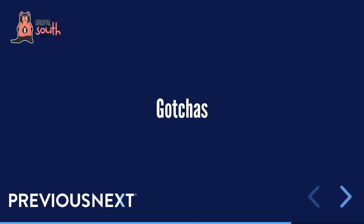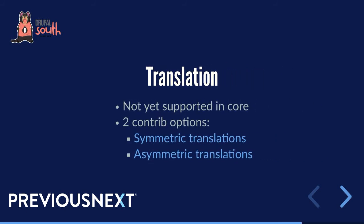Let's briefly touch on some gotchas — things that are good to know before you go implementing Layout Builder. Translation support is interesting: translation-specific layouts are not supported by Layout Builder core. Thankfully, contrib comes to the rescue. There are two options: symmetric translation, where you can translate blocks but can't add or delete them — this has a likely path to core inclusion — versus asymmetric translation, where you can add or edit blocks as well. These two approaches are totally incompatible, so you have to choose one upfront.